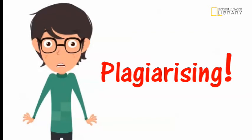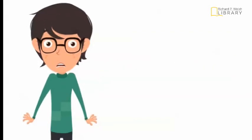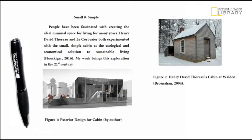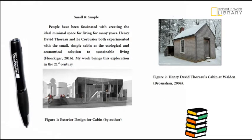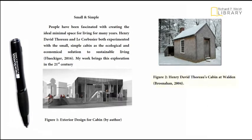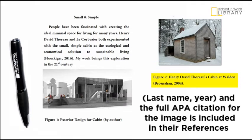Let's take a look at some examples. Images not created by the student must be cited in the list of references at the end of the paper. Remember, only images that you did not create — for example, photographs on the internet, from a book, or otherwise not taken yourself — require a citation. This student includes an in-text citation after their caption in parentheses with last name and year, and the full APA citation for the image is included in their references.